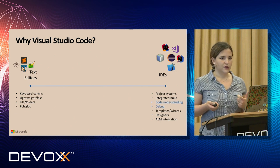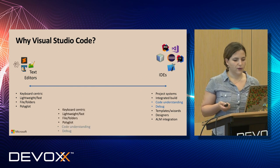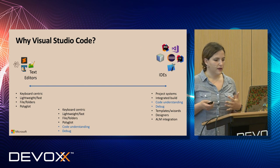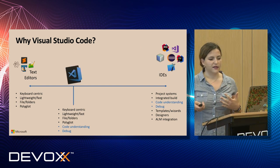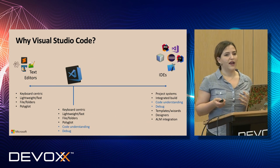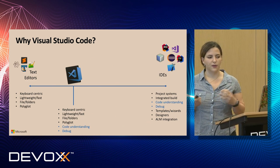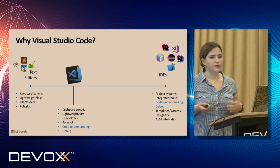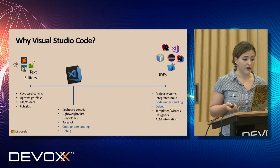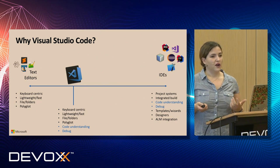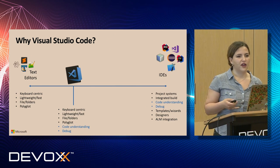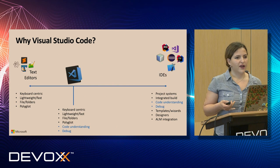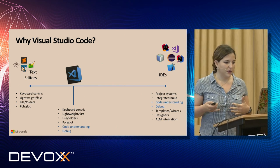So where does Visual Studio Code stand? It's somewhere in the middle, between text editors and IDEs. VS Code is keyboard-centric, lightweight, and fast. When you download it, you don't get all the plugins built in — you pick which plugins you want to make sure your workspace is aligned to your work. It's also polyglot: you can develop in JavaScript and Java in the same place, or move from Python scripts back to Java development without changing your screen.